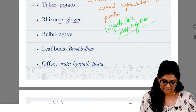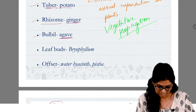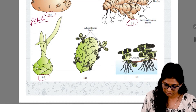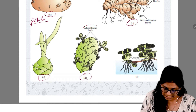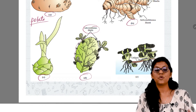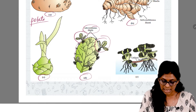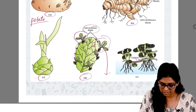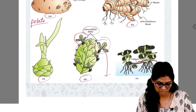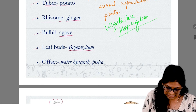Then, this is agave. In agave, it is known as bulbil. Then bryophyllum — you can see this leaf. What happens in it? The adventitious buds develop at the leaf margin. As the adventitious buds fall on the ground, the new plant will rise. So in bryophyllum, what is the vegetative propagule structure? The leaf buds.